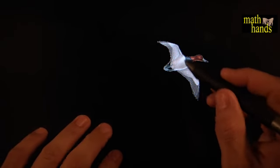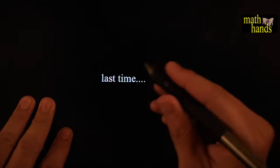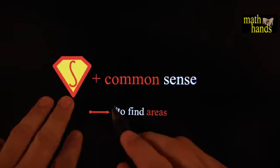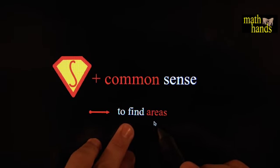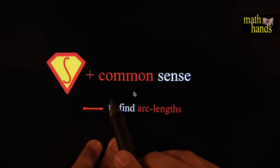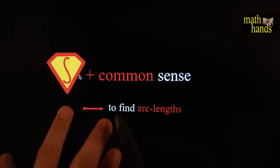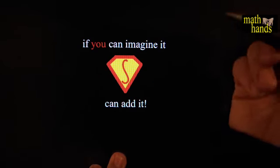Let's see if this bird can do calculus as well as it could dance. Last time we did a little bit of common sense and a lot of the fundamental theorem of calculus and found a whole bunch of areas. Today we want to continue using common sense and the fundamental theorem of calculus, but this time we want to find arc lengths.